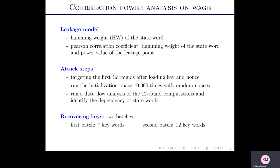To apply the correlation attack, we need power traces. We use Hamming weight as our leakage model and Pearson correlation in the CPA attack, which is quite standard. We consider the first 12 rounds of the WAGE initialization phase, where we load the key and nonces. We collect 10,000 power traces for different nonces, and each power trace has 600 points. To recover the key, we also perform data flow analysis exploiting the internal state update of the WAGE permutation.